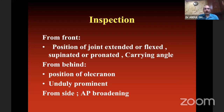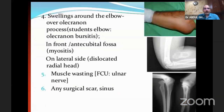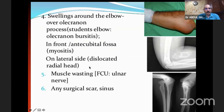From the front, note the position of the joint — whether extended or flexed, supinated or pronated, and the carrying angle. From behind, note the position of the olecranon — if it is prominent, suspect dislocation. From the side, whether there is any AP broadening. Swelling can be over the olecranon process like student's elbow or olecranon bursitis, on the front like in the antecubital fossa where the most common condition is myositis ossificans. It can also be on the lateral side like a dislocated elbow. Look for muscle wasting and any surgical scar or sinuses.